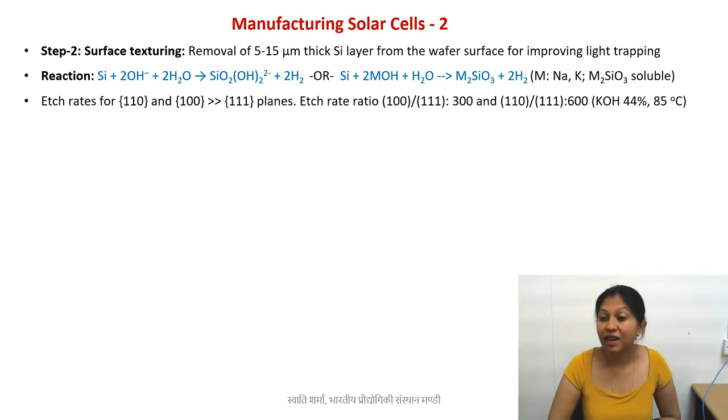What is interesting about alkaline etch and how is it different from acidic etch? Acidic etch is isotropic, meaning the etching rate is the same in all directions.